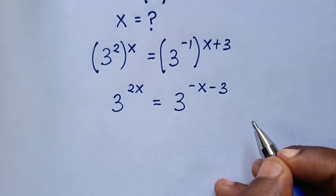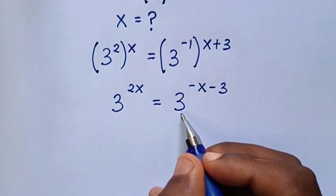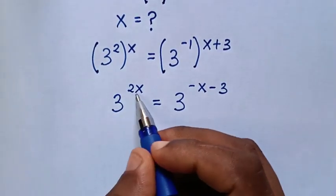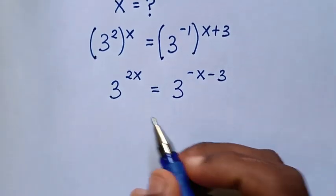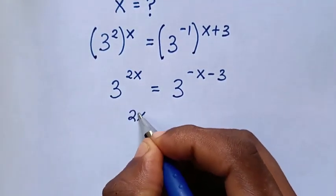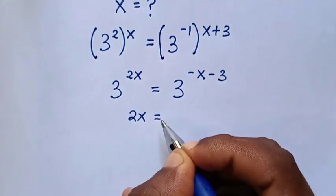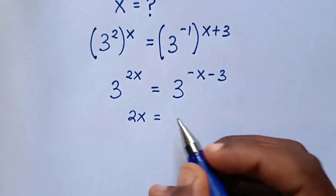Then, in the next step, because we have the same base of 3, we will compare the powers. Then it will be 2x is equal to negative x minus 3.